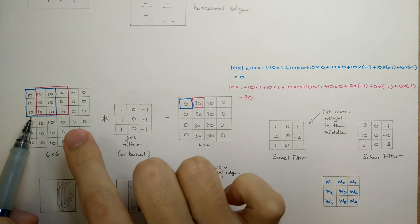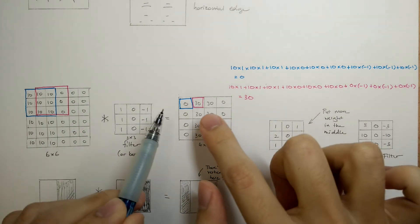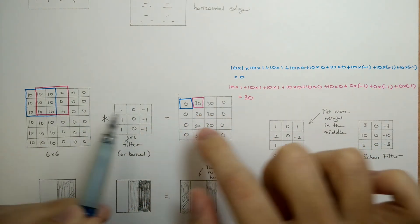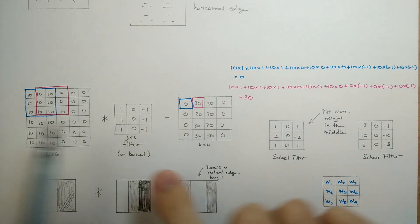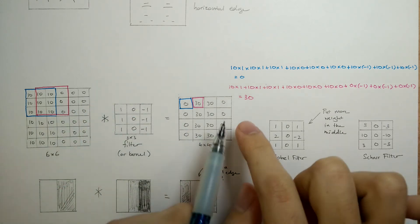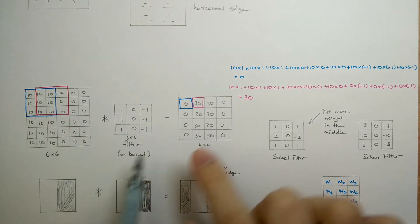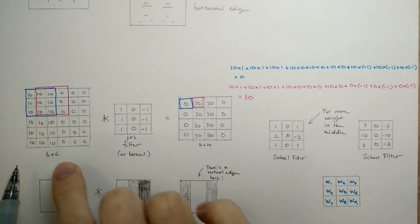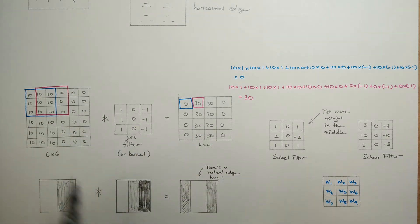Moving the filter right a stride, you'll get the sum of the element-wise multiplication would be 30. Moving in another stride is 30. Moving in yet another stride is 0. Moving it down a stride is 0. Moving it down another stride is 0. And so on and so on. Until you complete the pattern you see here.